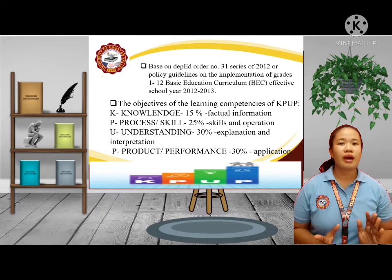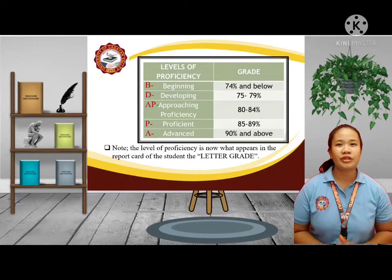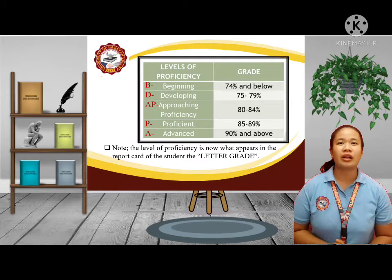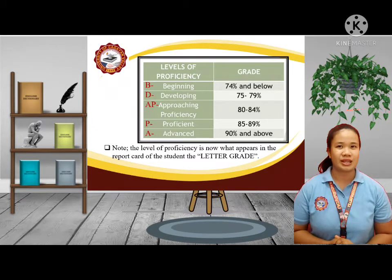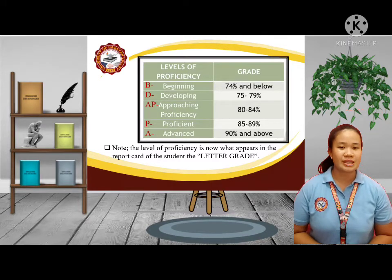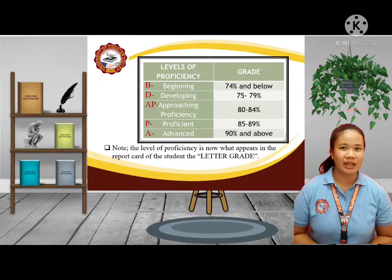After the KPUP summative test has been administered and after summing up the results of students' performance on the various levels of assessment, the numerical values are translated into levels of proficiency. Take note — the level of proficiency is what appears in the report cards of the student as the letter grade.